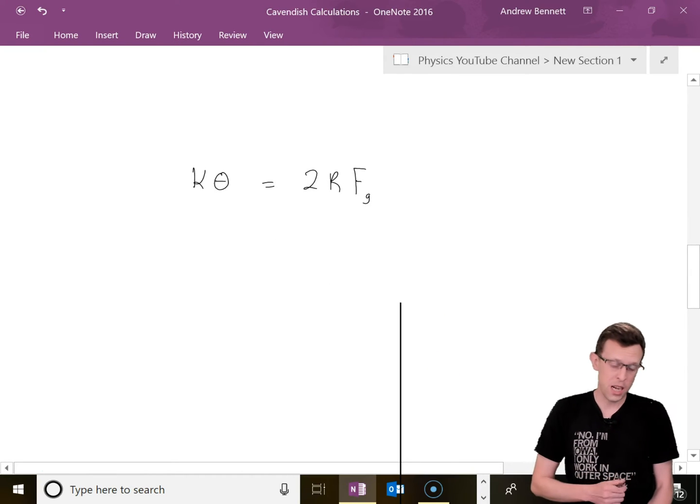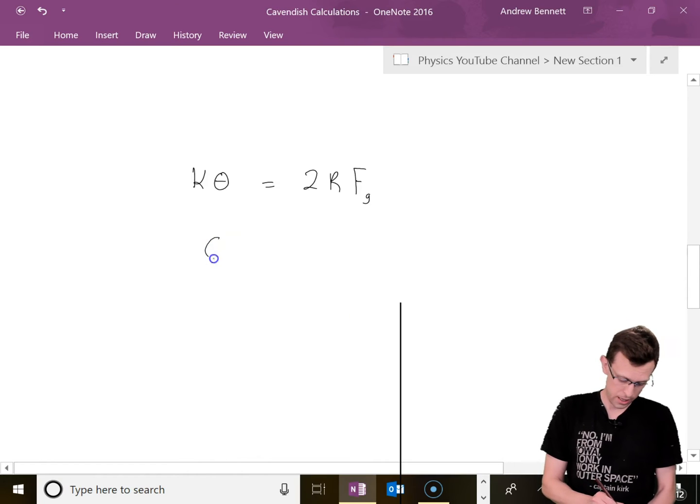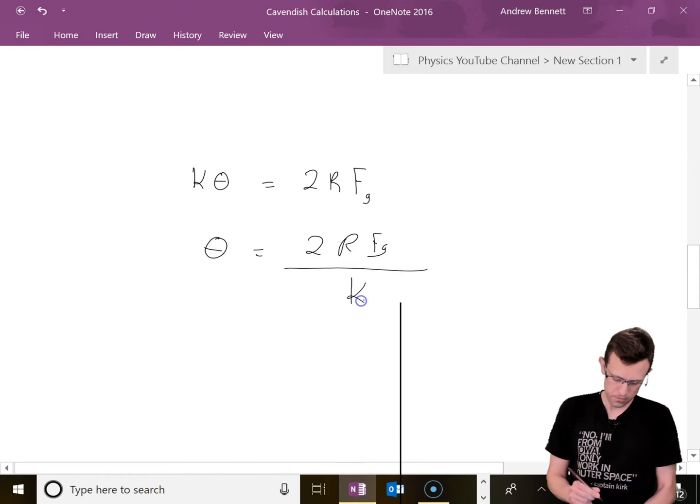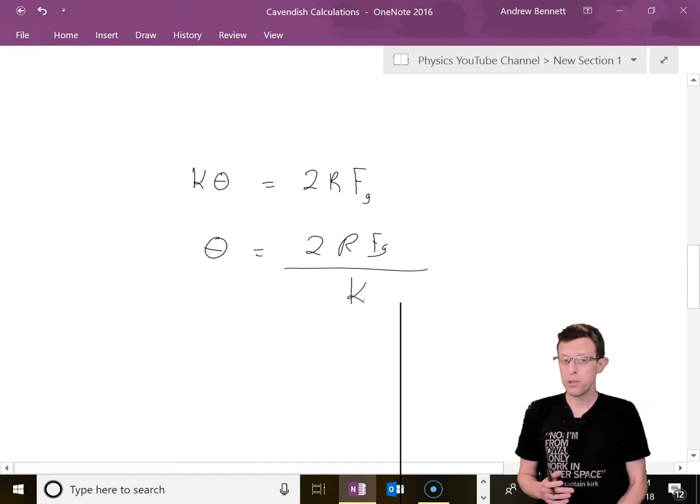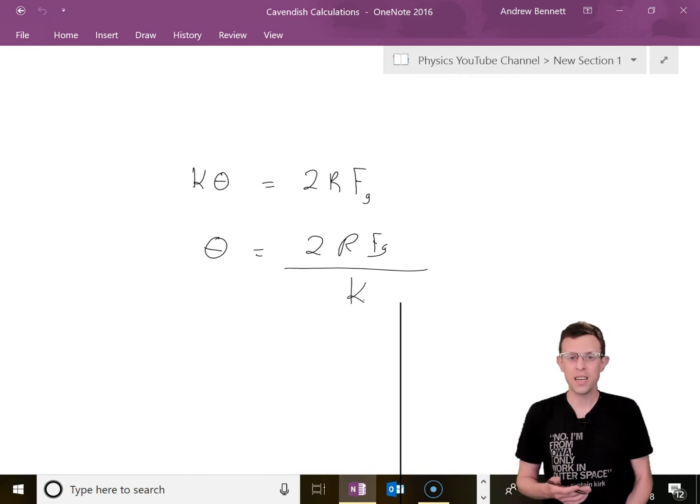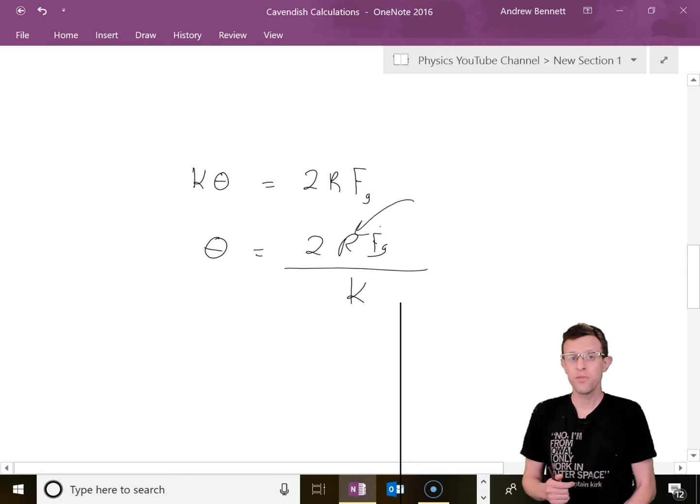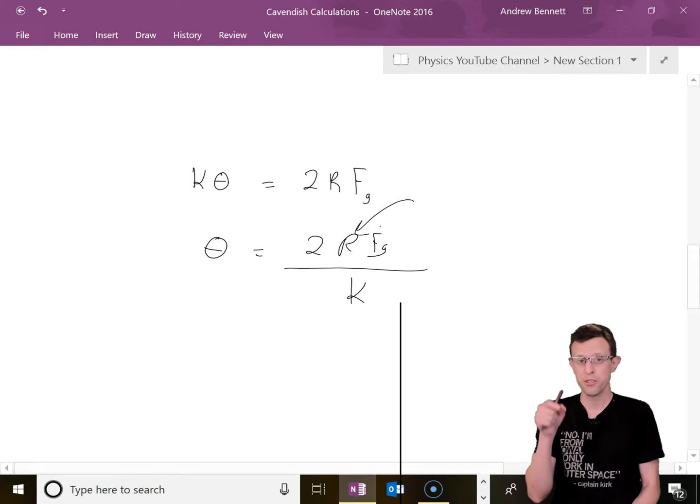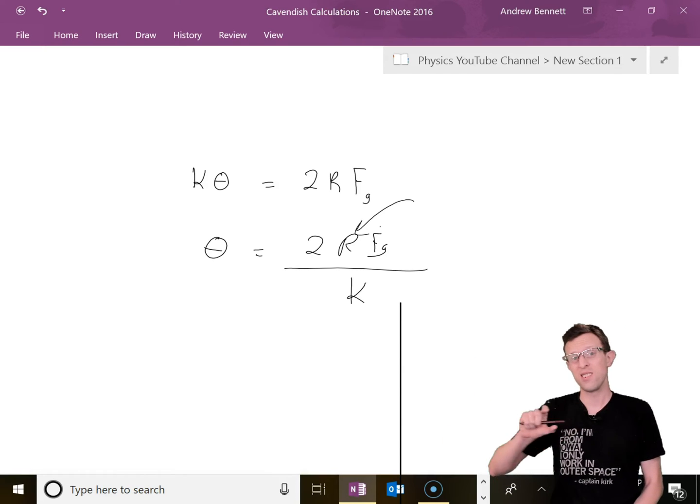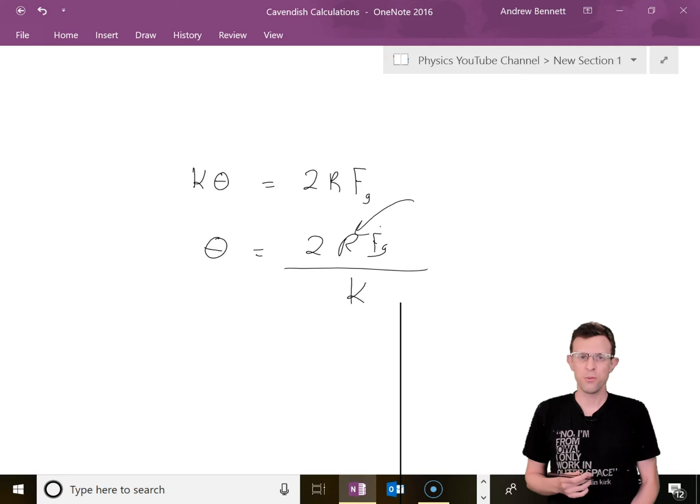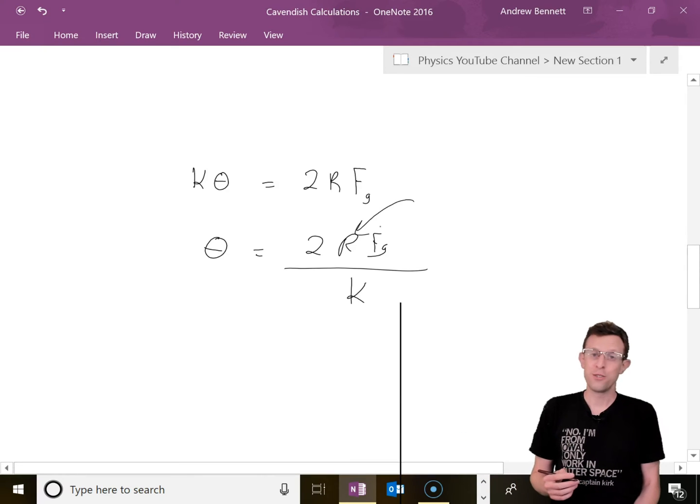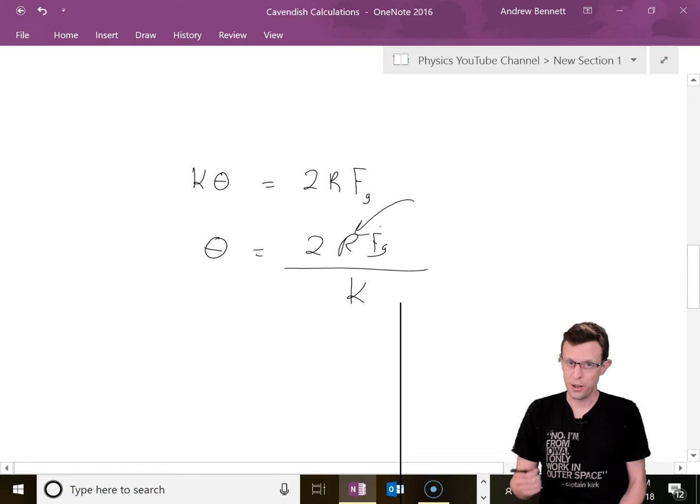At this point, I'm going to stop and think about design considerations. If I isolate theta, I get 2 R Fg over kappa. I need to be able to measure this angle. For it to be measurable, it needs to be as large as I can get it. To maximize theta, I've got R up in the numerator, so I want to get those masses as far from the center as I can and use as long a pole as I can. At some point though, we run into practical constraints - does it fit in the space I have, is it too heavy for a really thin string?